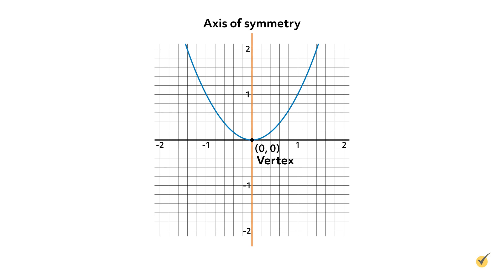In the parabola shown, y equals x squared, the vertex is the point at the bottom of the u-shaped parabola, seen here at the origin. Notice that this parabola is symmetrical with respect to the y-axis, which is the axis of symmetry on this graph. The vertex is the point at the bottom of the u-shape.